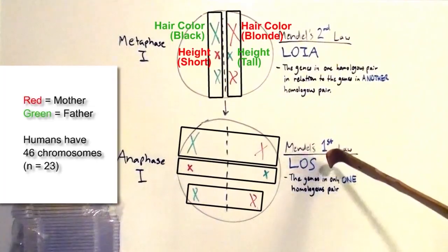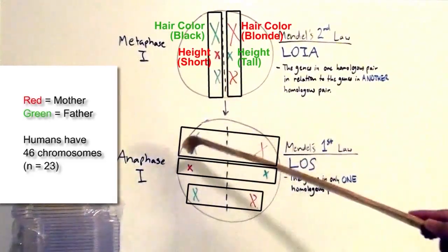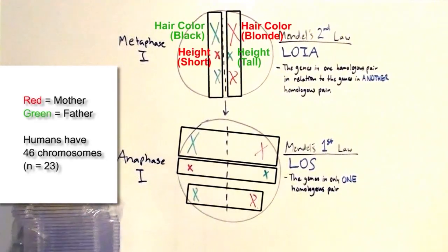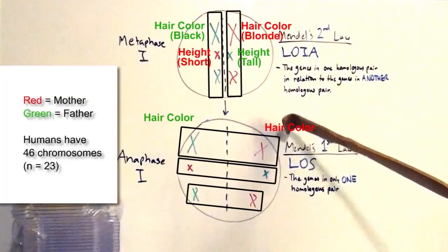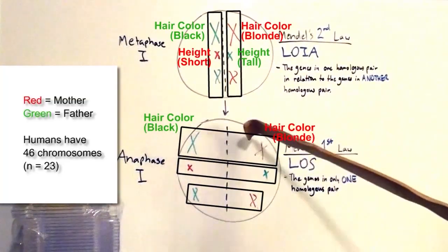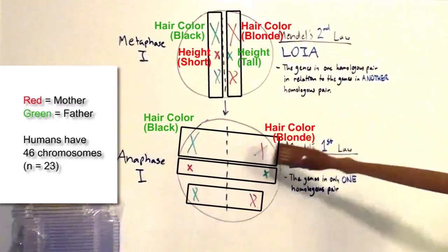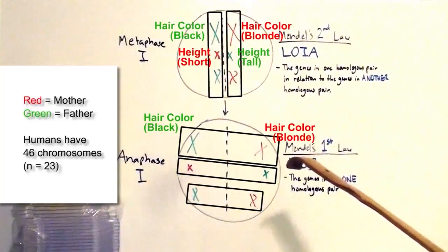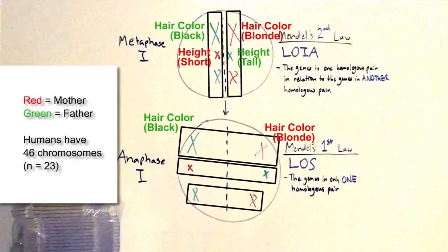The law of segregation, by contrast, is only about one homologous pair in relation to itself, not in relation to the other homologous pairs as we saw in the law of independent assortment. We are looking at just one homologous pair, one at a time. Remember that we said we have a gene for hair color in homologous pair one and that mom has an allele for blonde hair and that dad has an allele for black hair? Well, during the law of segregation, those alleles are separating onto each side of the cell. That's what it means by the law of segregation — alleles for a given gene separate, or segregate, or split up.